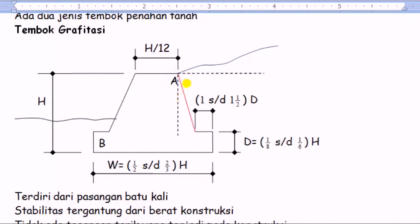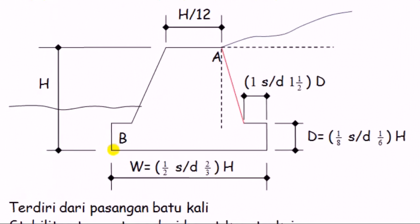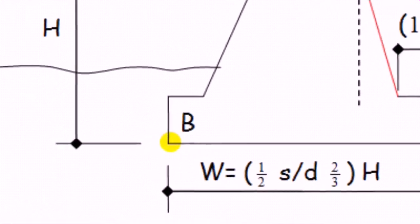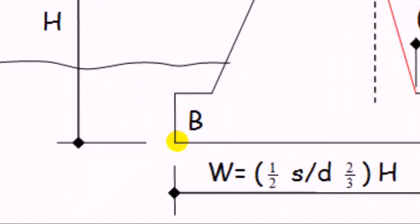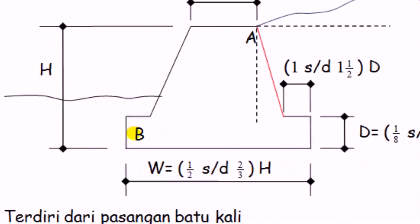Satu lagi titik yang harus kita perhatikan pada konstruksi bangunan tembok penahan tanah adalah titik B. Titik B ini adalah di bagian bawah ini merupakan titik dari tergulingnya tembok apabila tekanan tanahnya terlalu kuat.